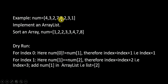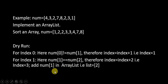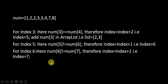Now we will see the dry run with the example 4 3 2 7 8 2 3 1. First we implement our array list, then sort the array to get 1 2 2 3 3 4 7 8. For index 0, the element at index 0 is not equal to the element at index 1, so we increment the index by 1. For index 1, the element at index 1 is equal to the element at index 2, so we increment the index by 2 and add the element at index 1.